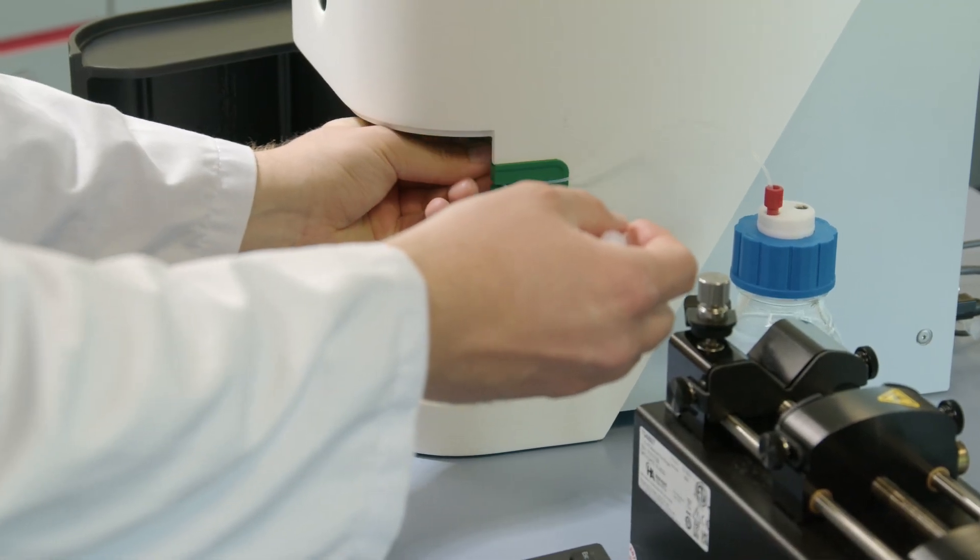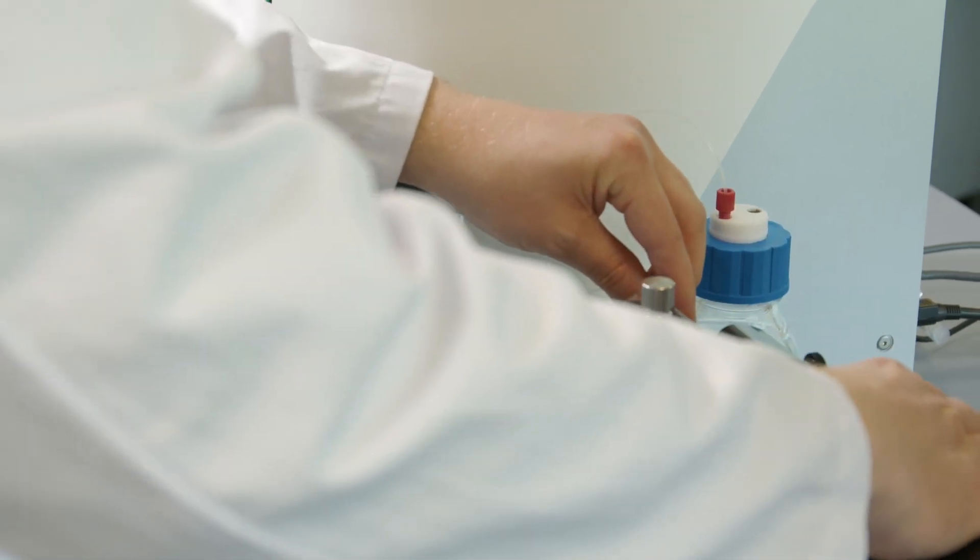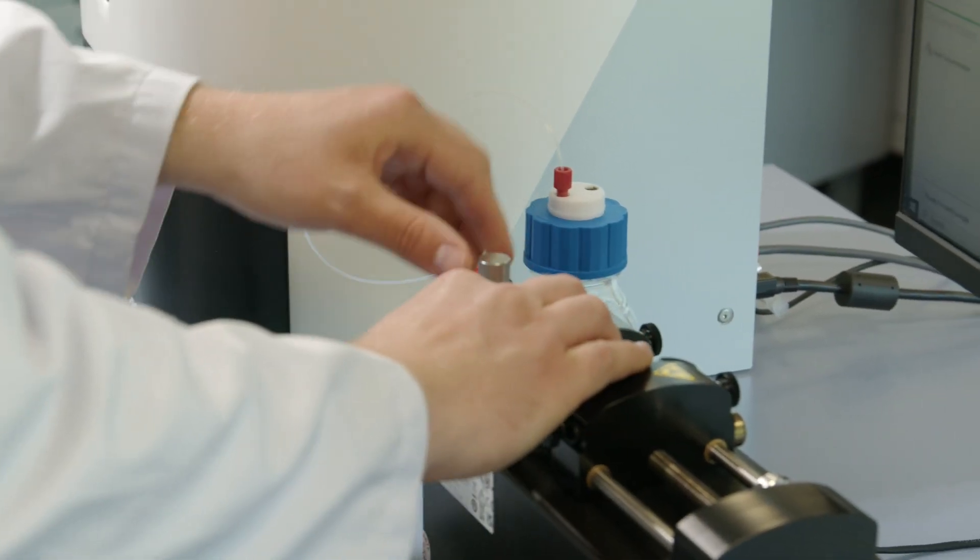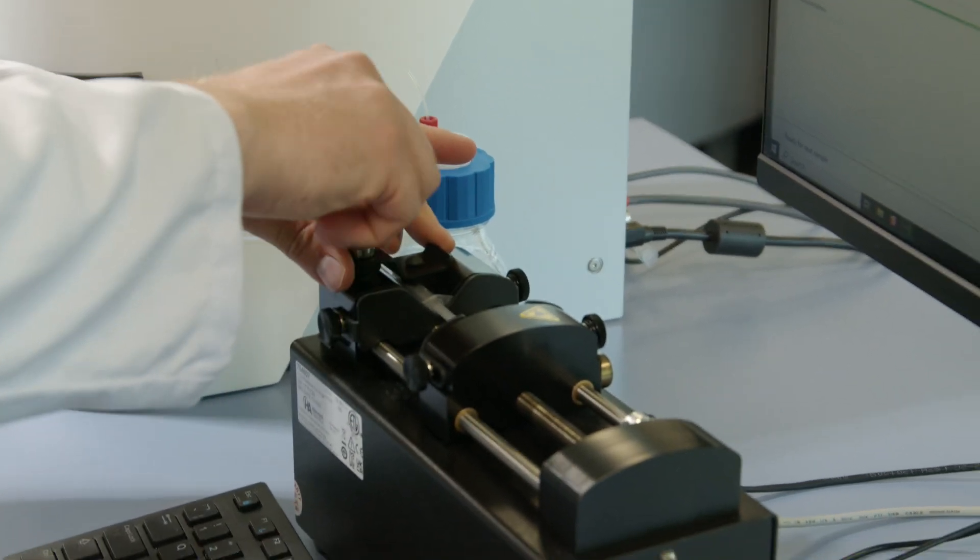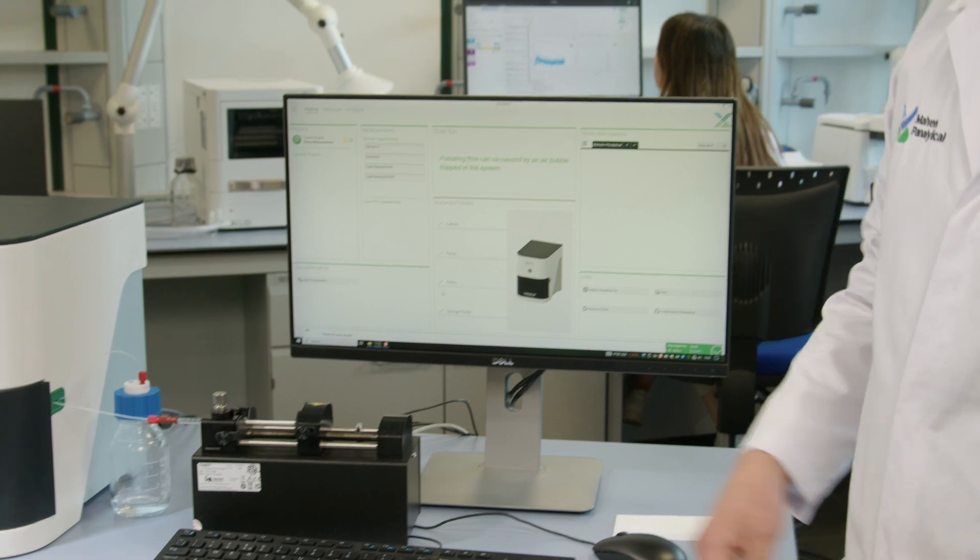Then we just put our tubing into the catch, close the door. Now the syringe goes into the syringe pump so we just need to adjust that, put the syringe down and then lock it in place. Now that we've finished setting up the sample it's all ready to measure and we can move on to the software.